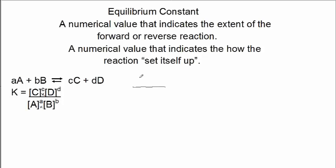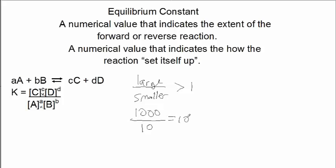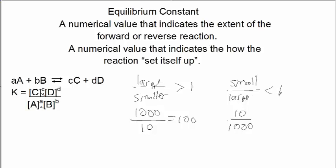If we have a fraction where we have a large number in the numerator and a smaller number in the denominator, the value of this fraction is going to be something greater than 1. For example, 1,000 over 10 equals 100, which is greater than 1. The other extreme is if we have a small number in the numerator and a larger number in the denominator, such as 10 over 1,000, we would have a number less than 1 — 10 over 1,000 would be 0.01.